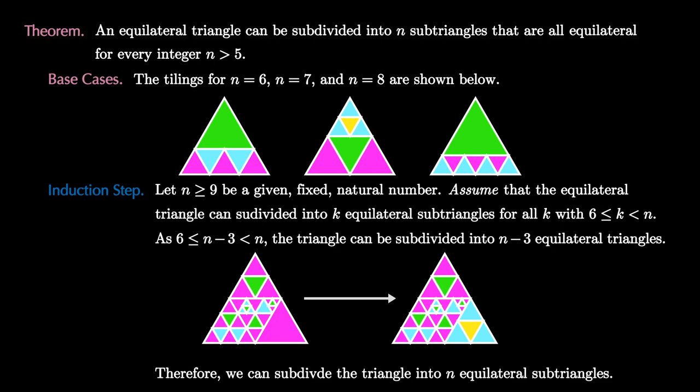The theorem thus holds by the principle of strong induction. The idea is that we can start with any of the three base cases and repetitively replace one equilateral triangle with the equilateral triangle that has been tiled with four triangles, and this will eventually get us to any number that we want.